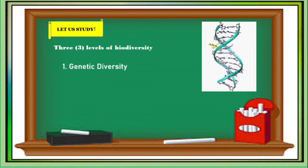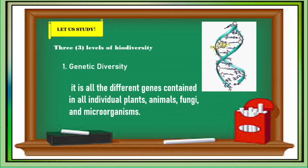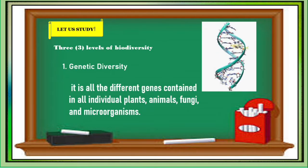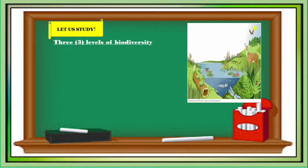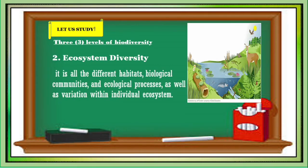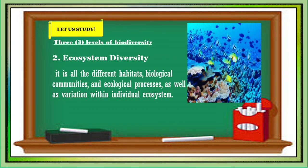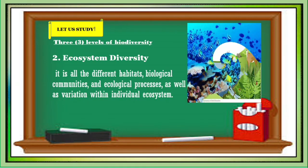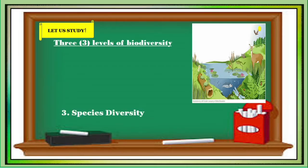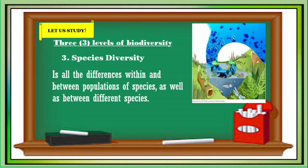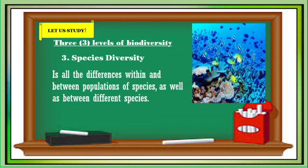Genetic diversity refers to all the different genes contained in all individual plants, animals, fungi, and microorganisms. Ecosystem diversity refers to all the different habitats, biological communities, and ecological processes, as well as variation within individual ecosystems. Species diversity refers to all the differences within and between populations of species, as well as between different species.